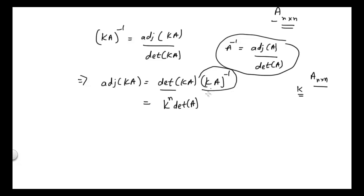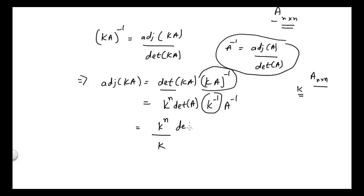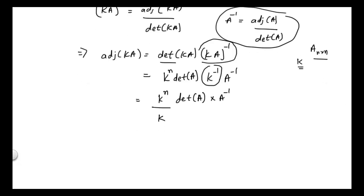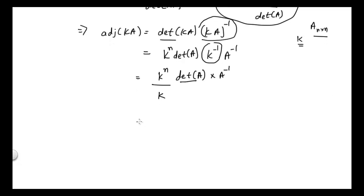Regarding the (kA) inverse part, I can write it as k inverse times A inverse, since k is just a scalar. So we have k^n times k inverse — which gives k^(n-1) — times determinant of A times A inverse. Note that determinant of A is also a scalar quantity.